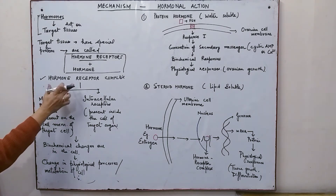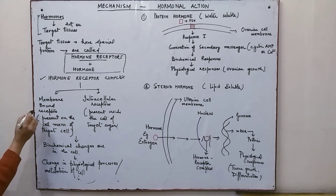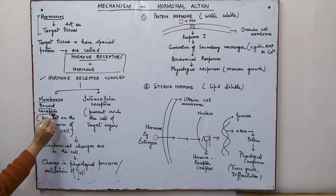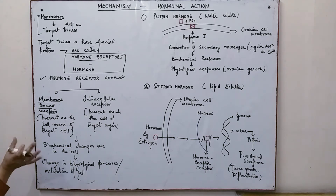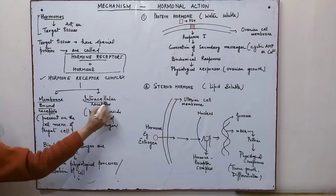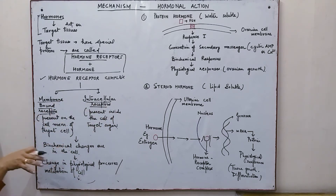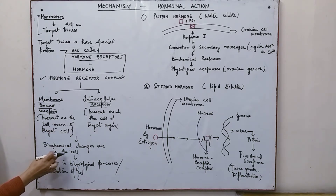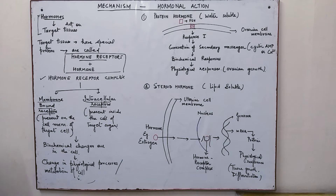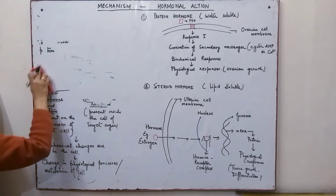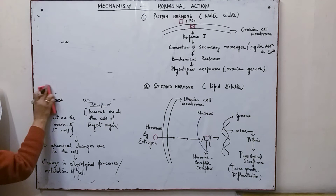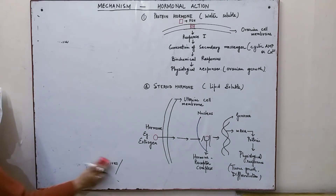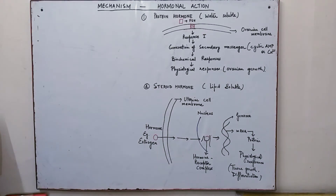Depending upon the position of the hormone-receptor complex, we classify them into two types: membrane-bound receptors found on the cell surface or cell membrane of the target cell, and intracellular receptors present inside the cell of the target organs. They then bring about biochemical changes, resulting in physiological and metabolic changes in the cell.